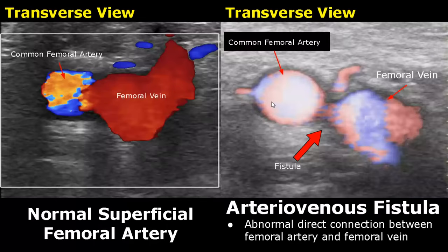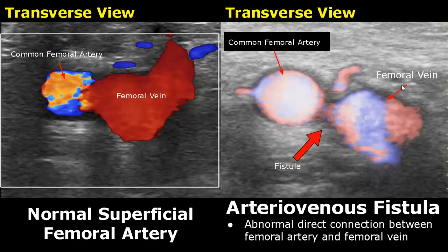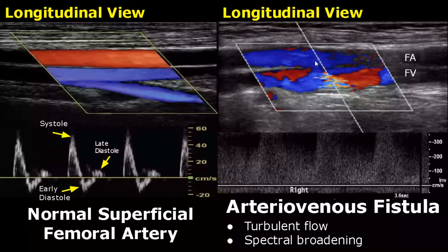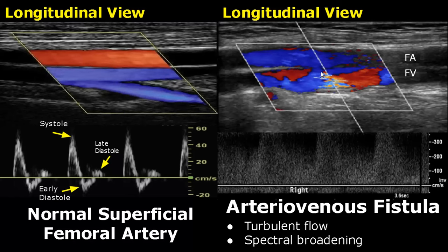An arteriovenous fistula is an abnormal direct connection between the femoral artery and femoral vein. In transverse view with color Doppler applied, we can see this connection between the femoral artery and vein with color mixing in both vessels. Here is an arteriovenous fistula in longitudinal view showing the connection between the artery and vein. We see turbulent flow with spectral broadening.